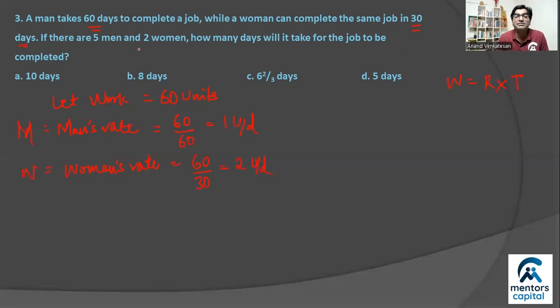Now a group is formed with 5 men and 2 women. So what is the group's rate? The group rate will be 5 men's rate, 5 times M, and 2 women's rate, 2 times W. So that's gonna be 5 times 1, 5, plus 2 times 2, 4. So the required rate of the group is 9 units every day.